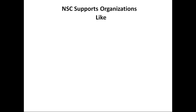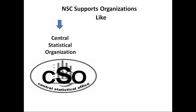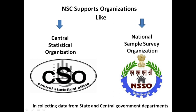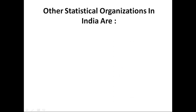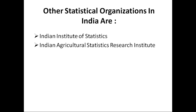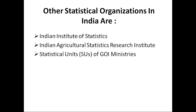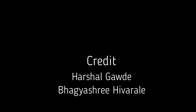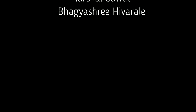The NSC supports organizations like the Central Statistical Organization (CSO) and the National Sample Survey Organization (NSSO) in collecting data from state and central government departments. Other statistical organizations in India include the Indian Institute of Statistics, the Indian Agricultural Statistics Research Institute, Statistical Units of GOI Ministries, Statistical Units of State Government Departments, and District Offices of the Department of Statistics.